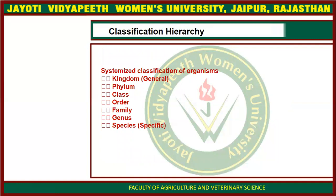What is the classification pattern? The classification pattern is: first Kingdom, then Phylum, then Class, then Order, then Family, then Genus, and last is Species.